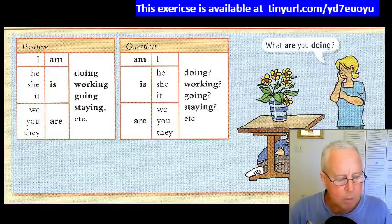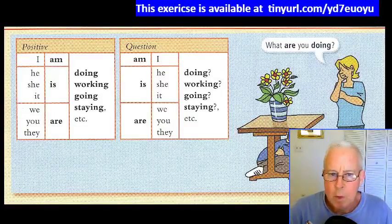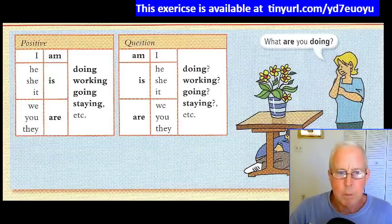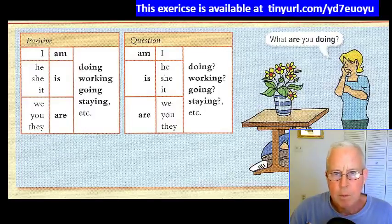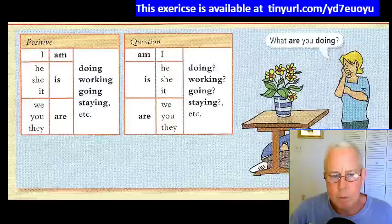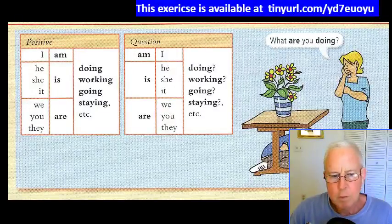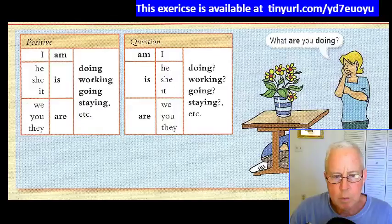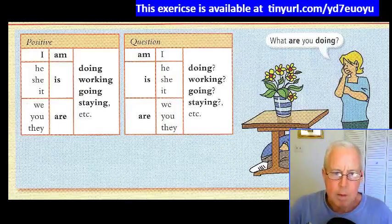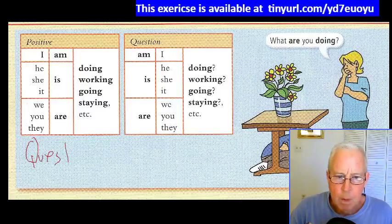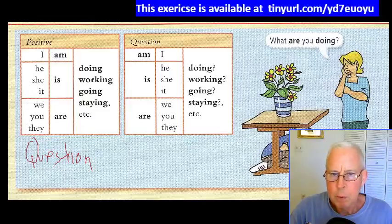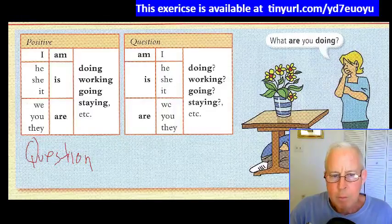We have a little time here so we're going to try Exercise Number Four, and this is the present progressive question form. Last time we talked about statement and negative. So again this is the question form of present progressive, or excuse me, present continuous. Sometimes I'll just call this the ING form.